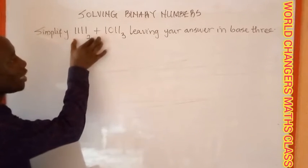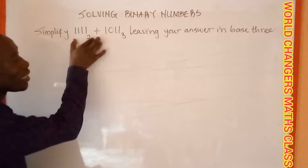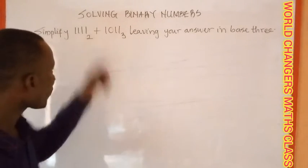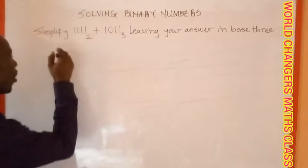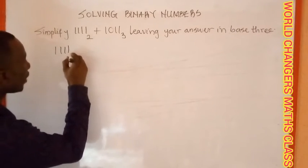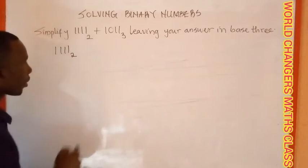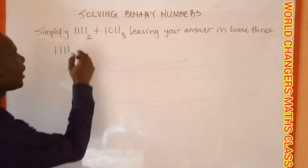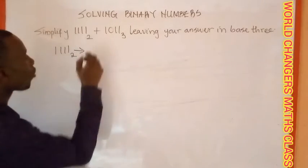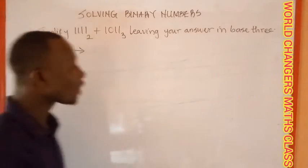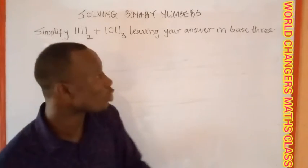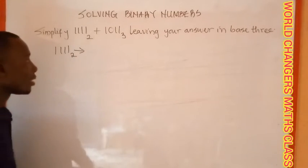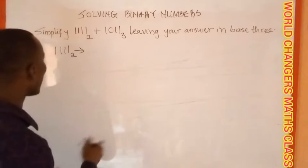The best thing to do is to consider the one that is not in base three, which is 1111 base two. The first thing to do is to simply convert this into base ten, and after that you are going to convert back to base three. Now how do we do that? Very simple.